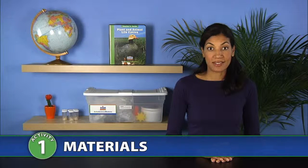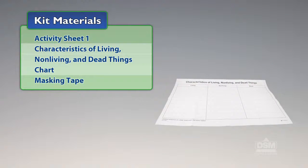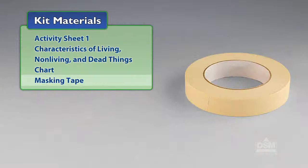You will need the following materials from the kit: Activity Sheet 1, Characteristics of Living, Nonliving, and Dead Things chart, and masking tape.